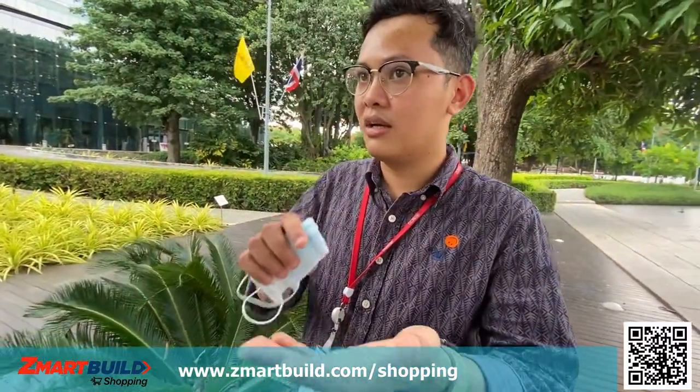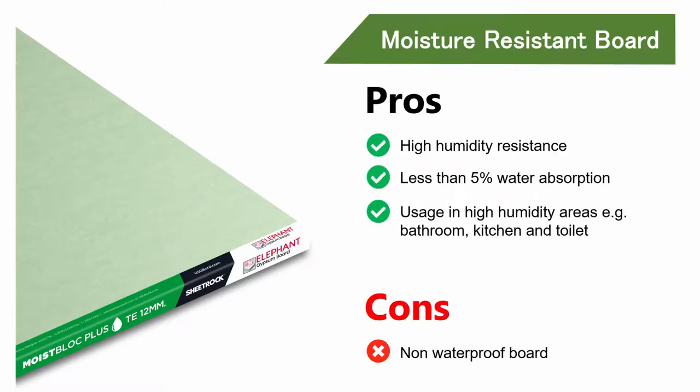The next one is the green one. The green color means moisture resistance. It's still a gypsum board, but in the production process, manufacturers add some additives that help increase the moisture resistance ability. Is it waterproof? Not really waterproof — just moisture resistance. You cannot pour water directly onto that board. So you can use the moisture-resistant gypsum board in the kitchen, toilet, and bathroom.